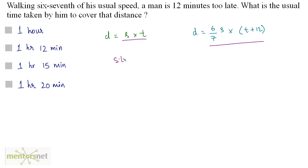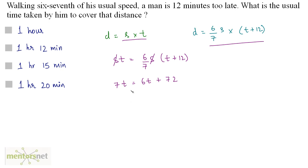So s·t equals 6/7 · s · (t + 12). The s terms cancel out, giving 7t equals 6t + 72, so t equals 72 minutes.